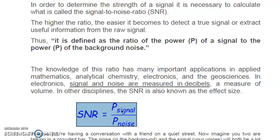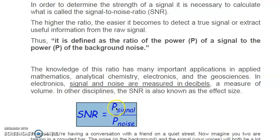The signal is in the numerator and noise is in the denominator. If the SNR value is higher, it means the signal is better or greater compared to noise. Since signal and noise are the same physical quantity, we can write power signal divided by power noise, voltage signal divided by voltage noise, or current signal divided by current noise. Both have the same dimensions, so we get a dimensionless ratio.